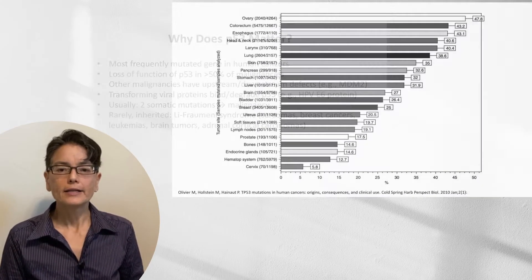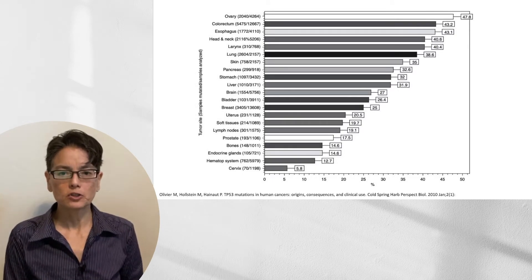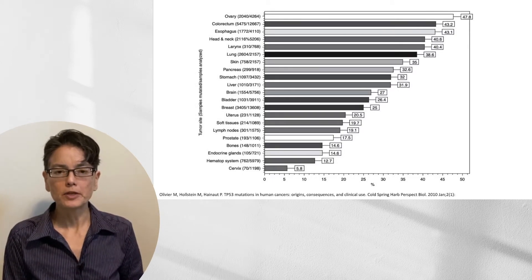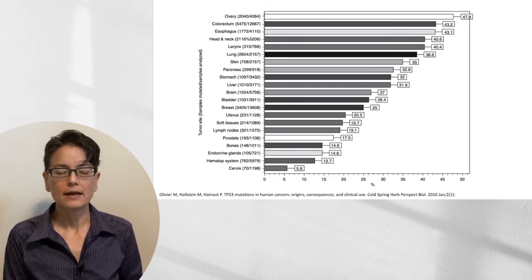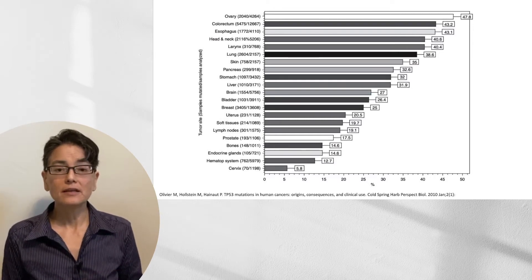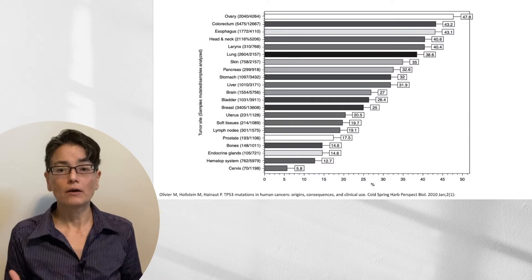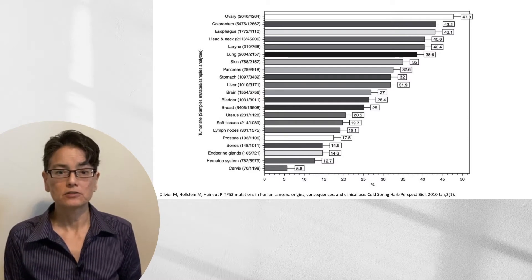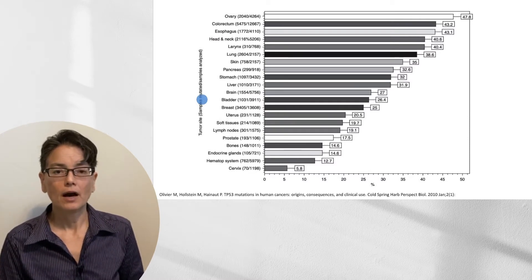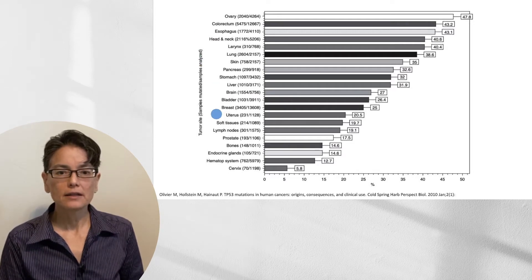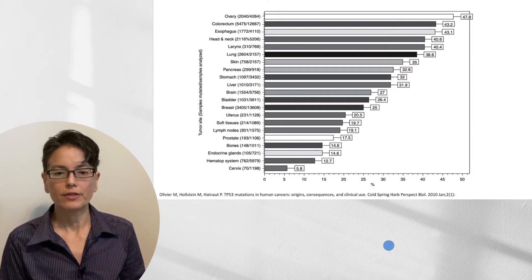I want to show you an image from a research paper looking at actual TP53 mutations in a variety of different malignancies. You can see just how many are affected by TP53 mutations: ovary, colorectal, esophagus, liver, brain, bladder — pretty much everything.